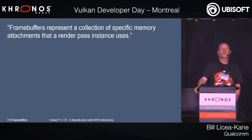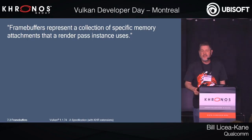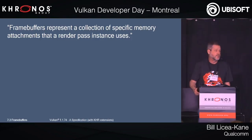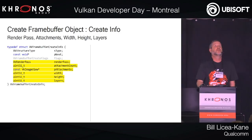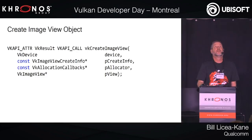Frame buffers represent a collection of specific memory attachments that a render pass instance uses. At the end of creating the frame buffer, we know everything we need to set up the render targets — in fact more than we need to, which is a source of frustration for ISVs. To create the frame buffer, you pass in the render pass we just created, the attachment count, and the width, height, and layers.